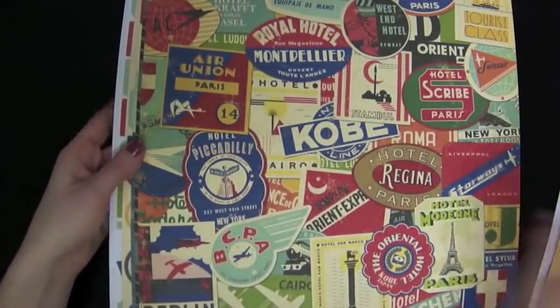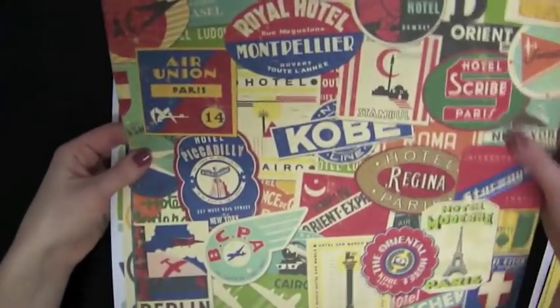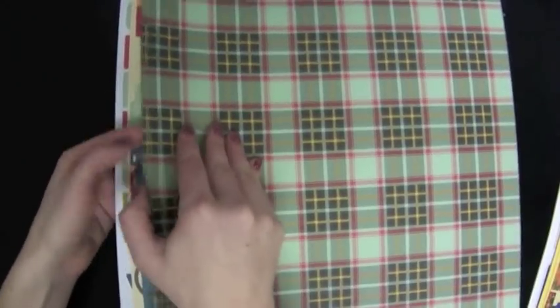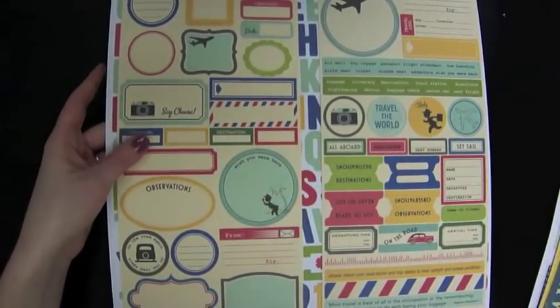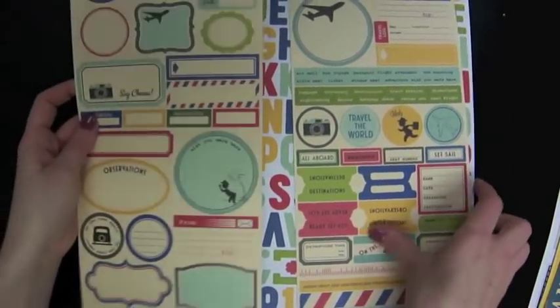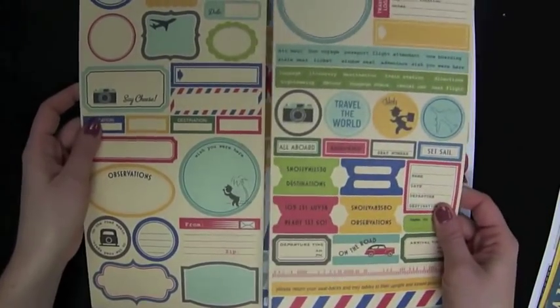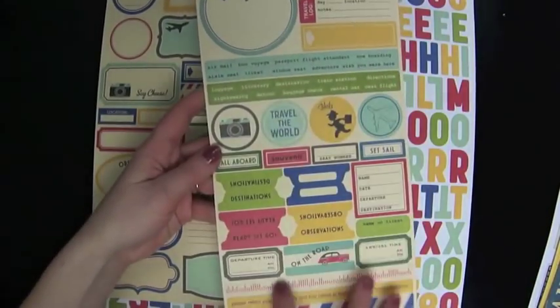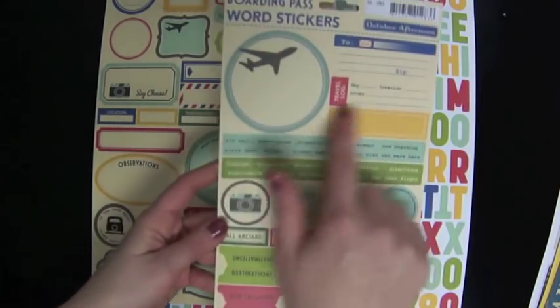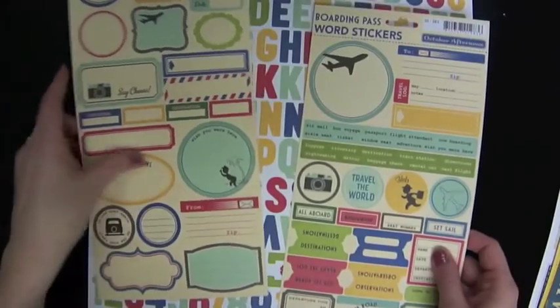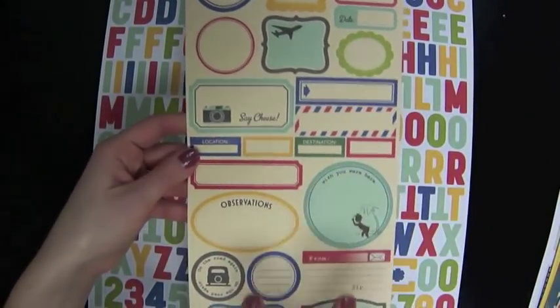I've seen this used a lot in non-travel pages too. Each collection kit comes with two 6x12 sticker sheets. This one is the word stickers. You've got circles, tabs, rectangles, borders, labels that you can fill out. And then there's a label sticker sheet as well.